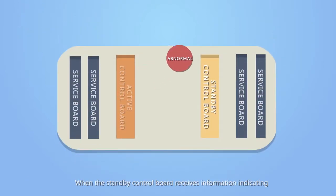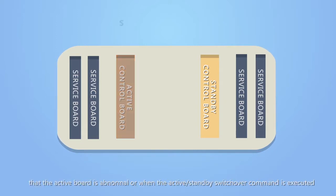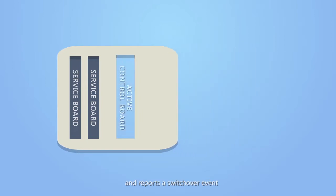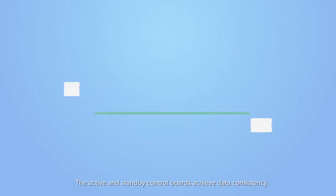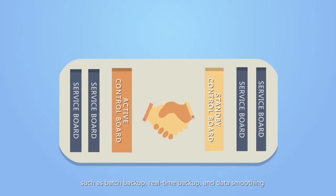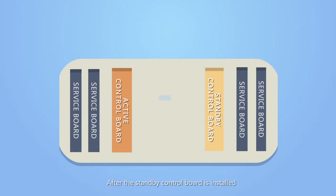When the standby control board receives information indicating that the active board is abnormal, or when the active standby switchover command is executed, the standby control board takes over the services of the active control board and reports a switchover event. The active and standby control boards achieve data consistency by using high availability mechanisms such as batch backup, real-time backup, and data smoothing.